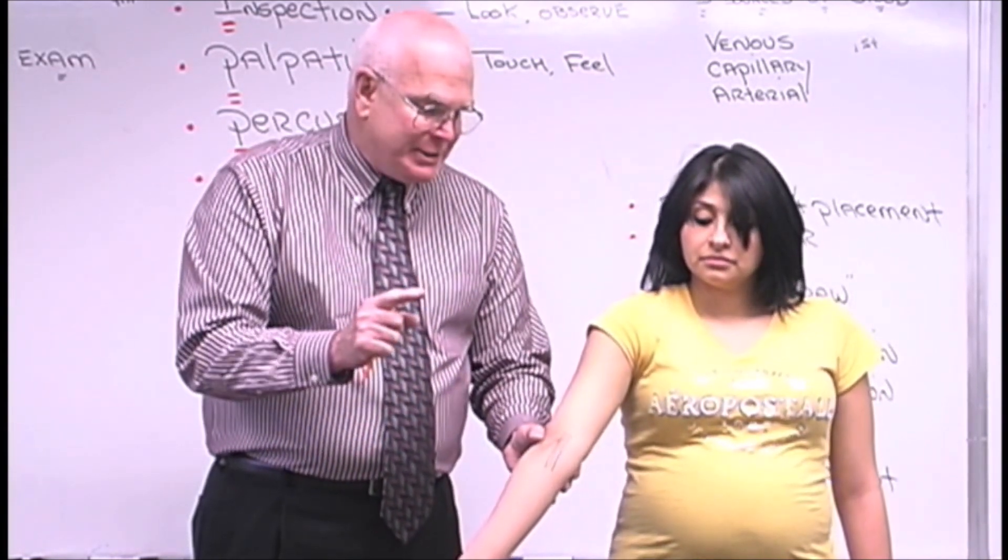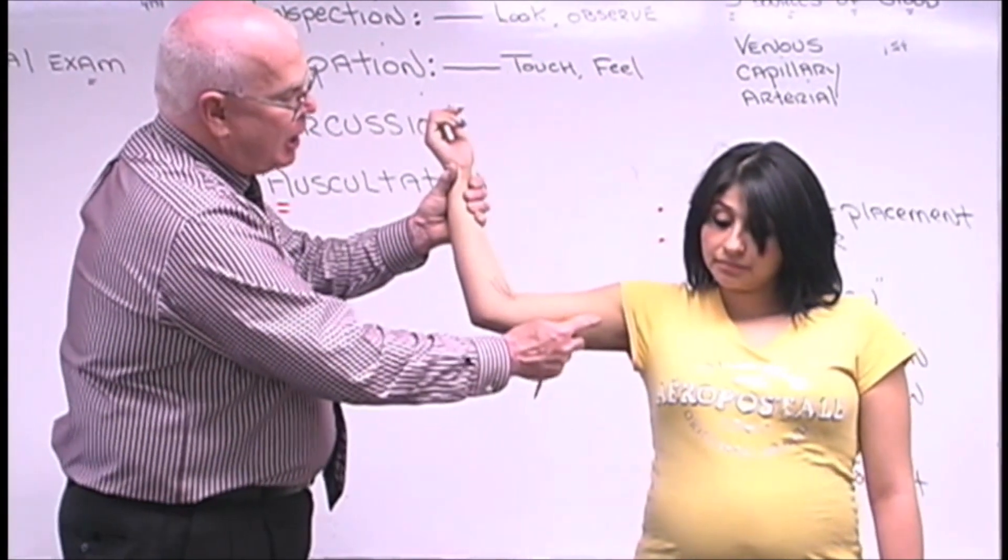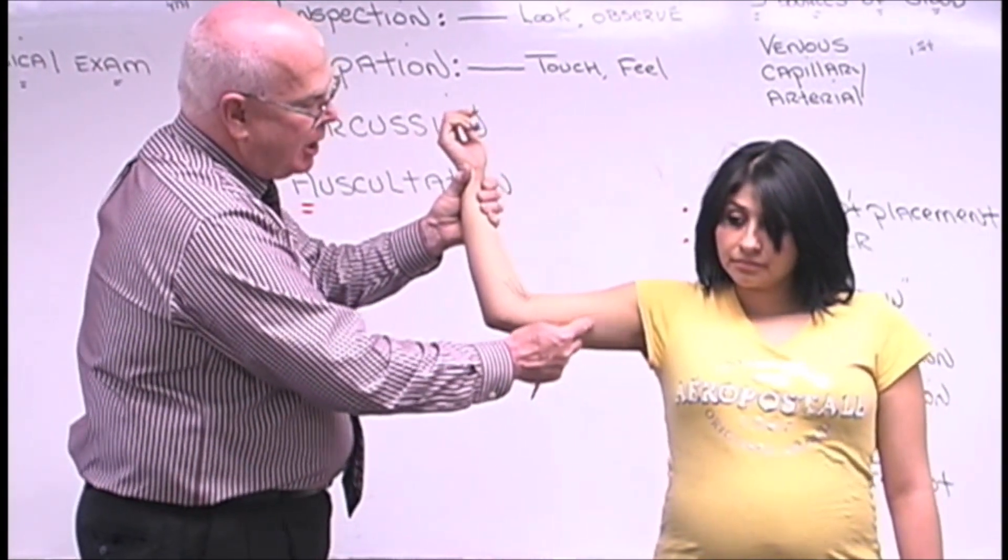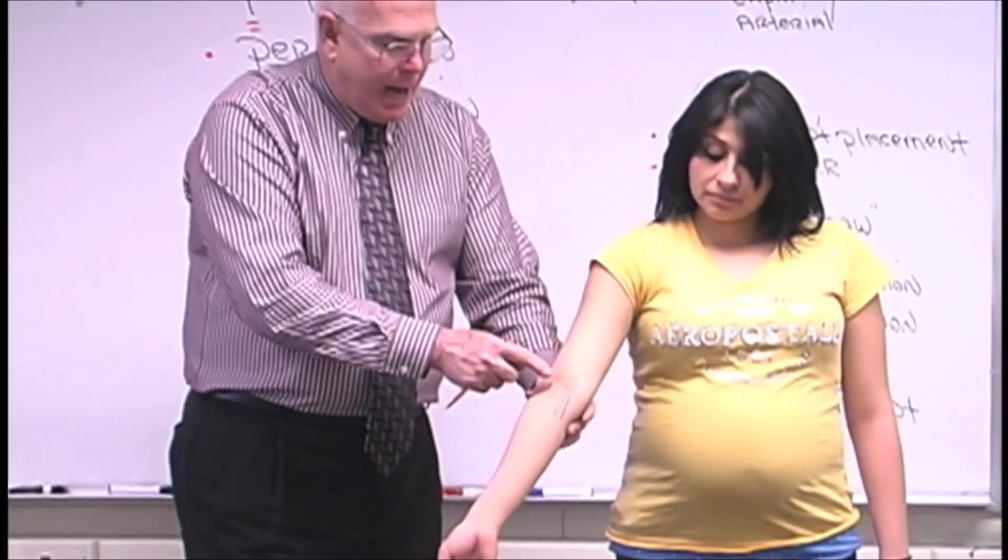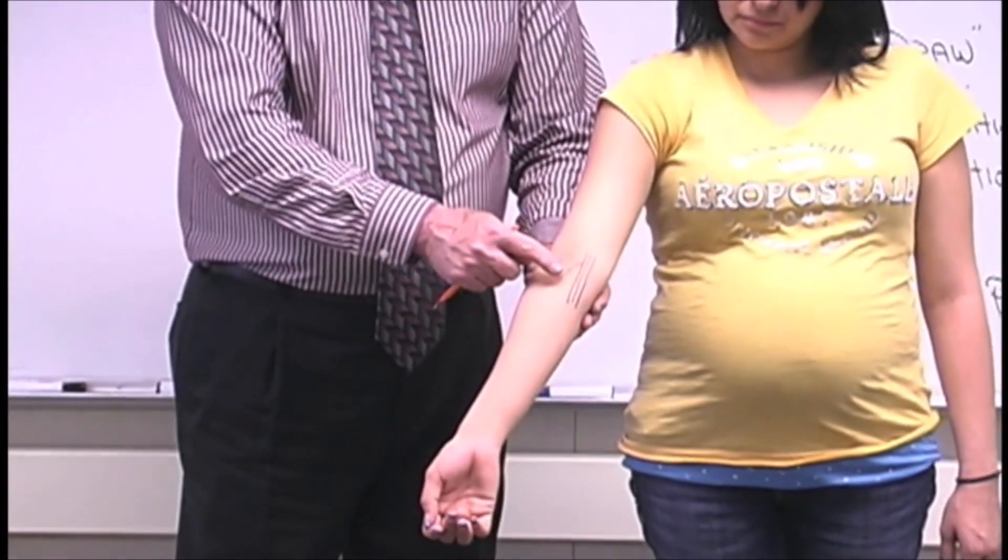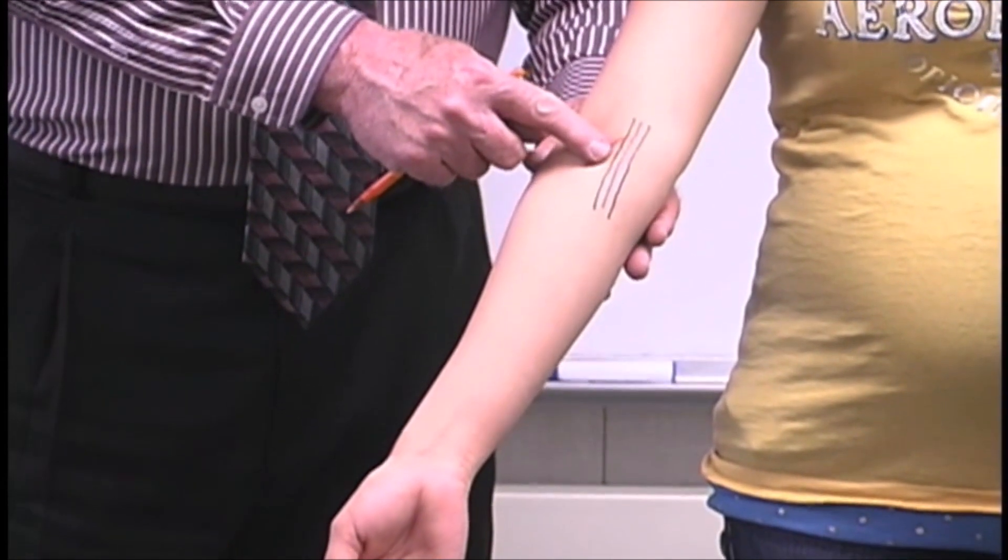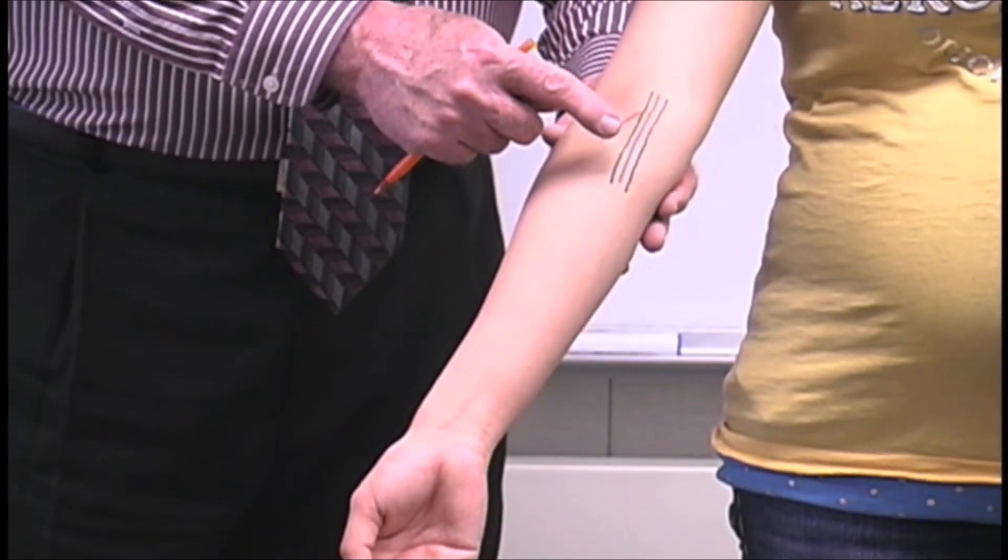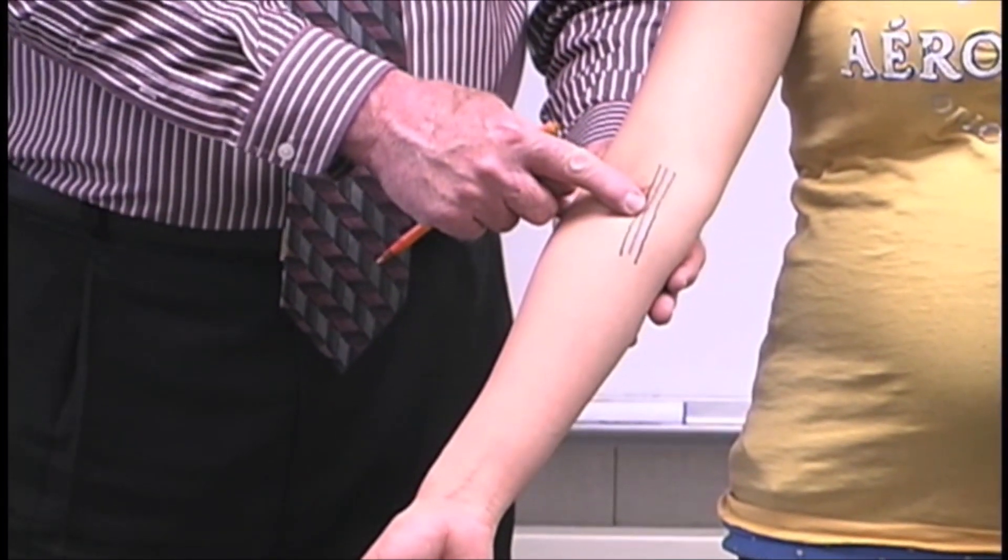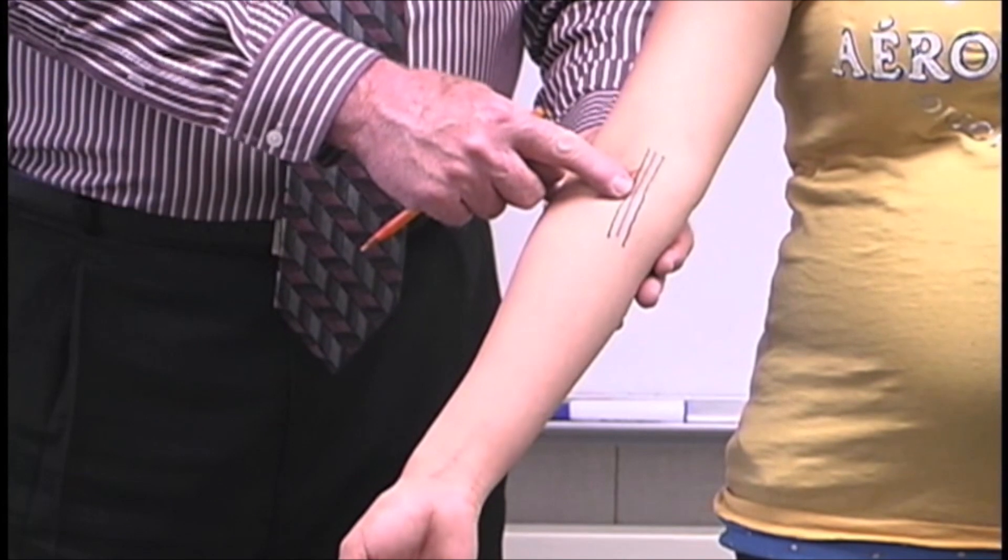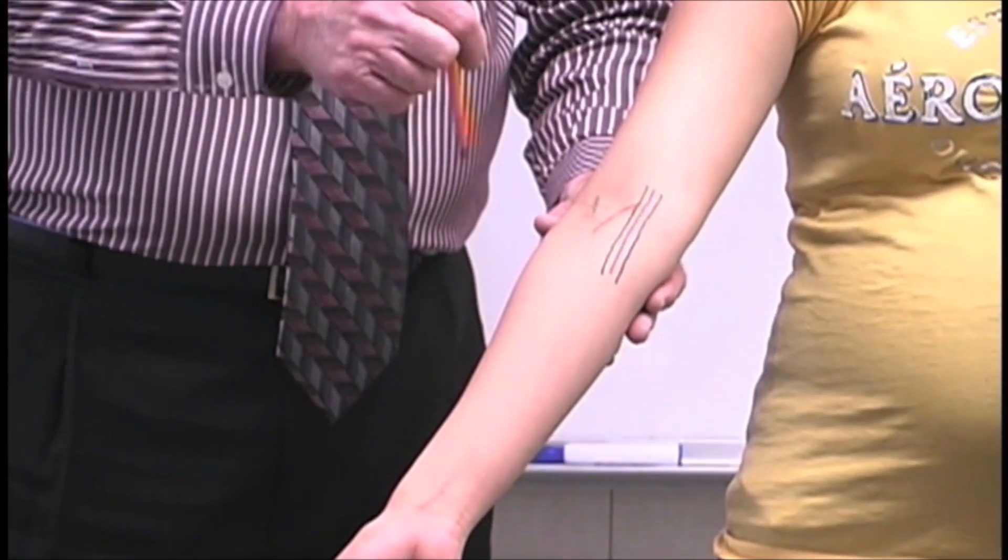The other problem with the basilic and why we want to try to avoid it is that the brachial artery, a quite large artery that runs down your arm here almost right on the inside and then rolls out here in the antecubital fossa, is very proximal or very close to the basilic vein. If I put my finger right here, I can actually palpate or feel the brachial artery. So it's also possible to puncture the brachial artery if you're using the basilic as a choice.